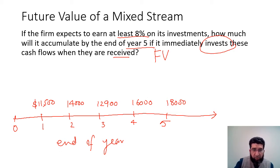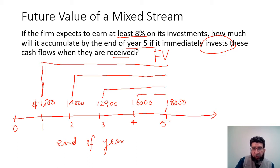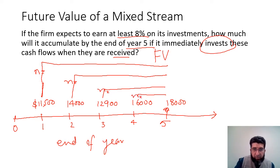We have to bring all amounts to the end of year five. This first amount travels the furthest, then the next, and so on. The $18,000 is already at the end of year five so n equals zero — no further time value of money is applied to it. Counting back, n equals four for the first cash flow, then n equals three, two, and one for the subsequent ones.